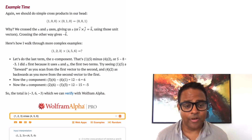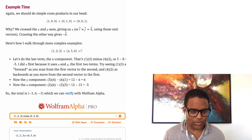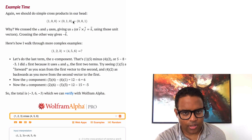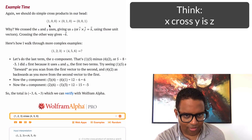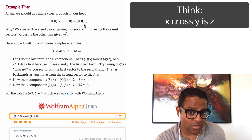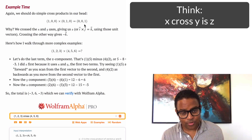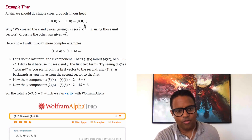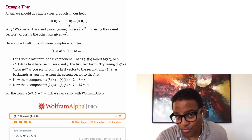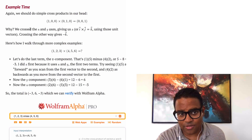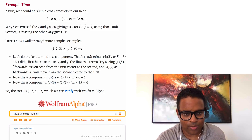Let's try an example. It's important to have intuition and not just mechanically apply the formula. When you see something in the X dimension crossed with something in the Y dimension, you should think: it should be something in the Z dimension — like 1 and 1 is 2. This is just X cross Y is Z. With (1,0,0) cross (0,1,0), the X vector cross the Y vector is simply the Z vector — (0,0,1).